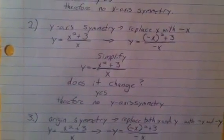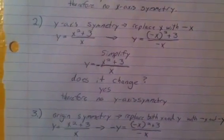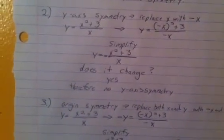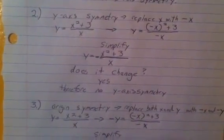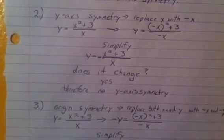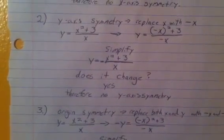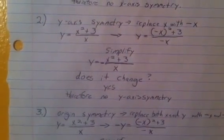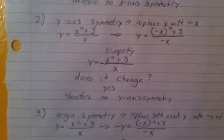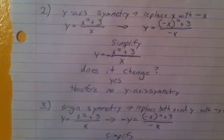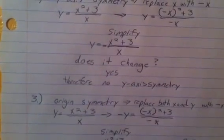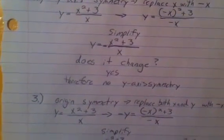Second, we will check for y-axis symmetry by replacing x with negative x. In the equation y equals x squared plus 3 over x, we end up with y equals negative x squared plus 3 over negative x. Since negative x squared is the same as x squared, we take that negative out, returning it to x squared plus 3. Since negative x is the only negative left in the fraction, we bring that negative out front to get y equals negative of x squared plus 3 over x. Since the second half of the equation is now negative, yes it has changed, therefore there is no y-axis symmetry.